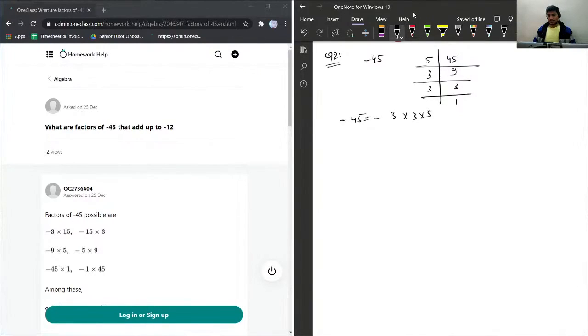Now I'll just split this term. This can be written as negative 9 times 5. Minus 45 can be written as negative 3 times 15. Negative 45 can be written as negative 45 times 1.